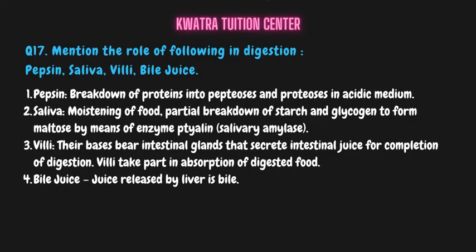Question number seventeen: mention the role of the following in digestion — pepsin, saliva, villi, and bile juice. Pepsin breaks down proteins into peptones and proteoses in an acidic medium. Saliva helps in moistening food, partial breakdown of starch, and formation of maltose by salivary amylase. Villi increase the absorption surface to maximize absorption of digested food in all directions. Bile juice is released by the liver and aids in digestion of fats.